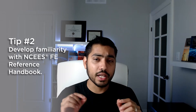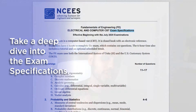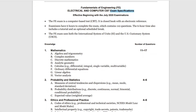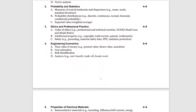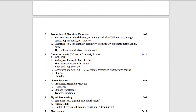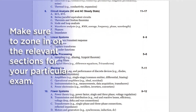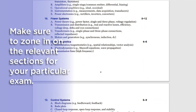Tip number two is to develop familiarity with the NCEES FE Reference Handbook, which — in addition to your calculator — is the only resource available to you during the exam. If you are just getting started with the FE Electrical and Computer exam or any other FE exam, my recommendation is to take a deep dive into the exam specification topics without even diving into any of the technical details first. That will help you map out what the exam entails and then zone in on the relevant sections of the handbook for your particular exam.